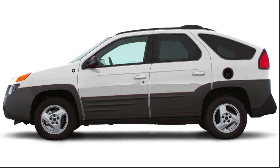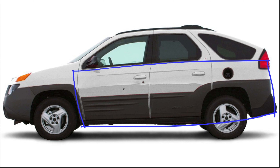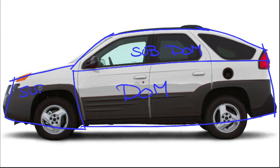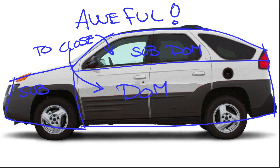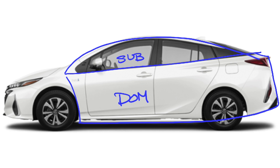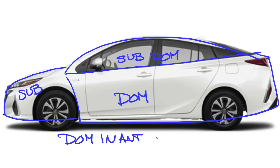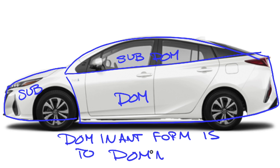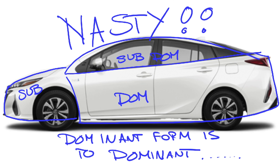The Pontiac Aztek — I'm so sorry, it really was terrible. The dominant and subdominant just don't work with each other; their proportions are terrible and too close in value. The Toyota Prius has the same problem — how can you screw up these basic proportions on a vehicle? You need to twist engineering's arm and make beautiful vehicles. Stop making vehicles with terrible proportions. The dominant form is way too dominant — the car is nasty.